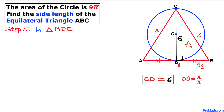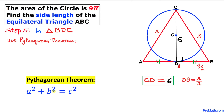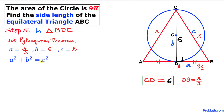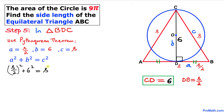Now let's focus on right triangle BDC. Since it's a right triangle, we'll use the Pythagorean theorem: A² + B² = C². In our case, the horizontal side A = S/2, the vertical side B = 6, and the hypotenuse C = S (which is side BC). Substituting: (S/2)² + 6² = S².